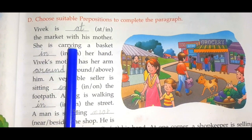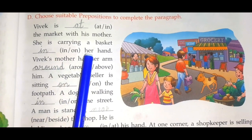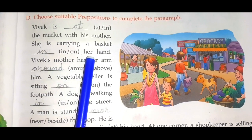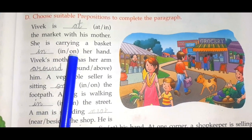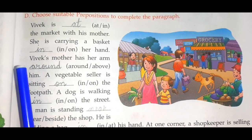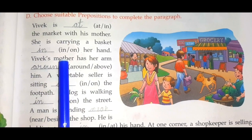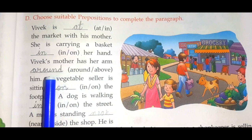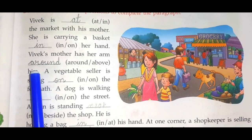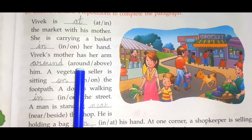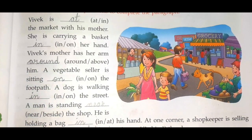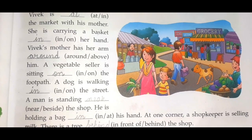She is carrying a basket dash her hand — we will use 'in': in her hand, not 'on'. Then next: Vivek's mother has her arm dash him — two options are 'around' and 'above' — so we will use 'around': around him. This way you have to complete question number D.